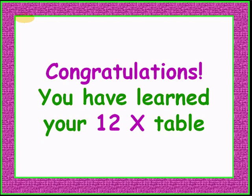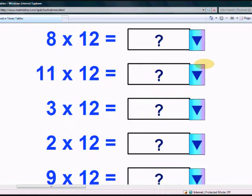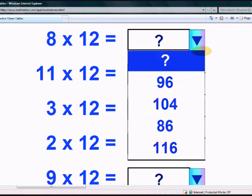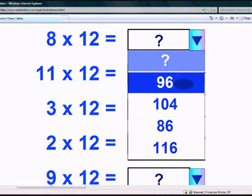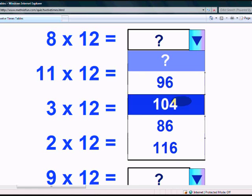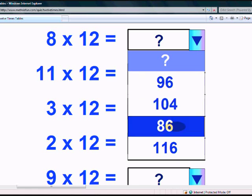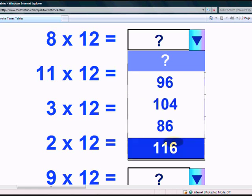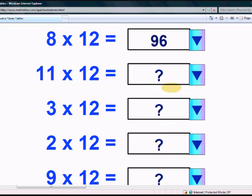You have learnt your 12 times table. Let's take the test! What is 8 times 12? The options are 104, 86, and 116. Yes, it's 96!